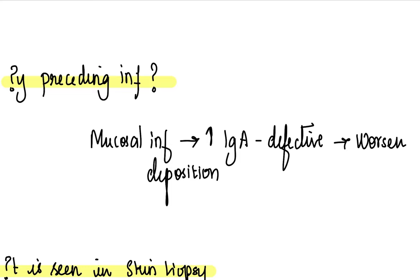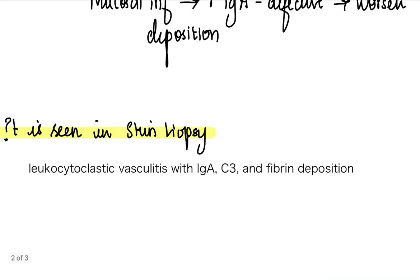Now why is there this preceding infection history? See, whenever there is a mucosal infection, what happens? It is going to fight against that infection. And what is the mucosal immunoglobulin? It is immunoglobulin A. This immunoglobulin A is defective in people who are already predisposed. So this increased production of defective IgA results in further antibody binding, immune complex deposition, and clinical manifestation. So that is why you see a presentation of IgA vasculitis following a mucosal infection.